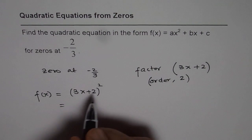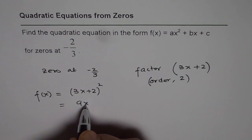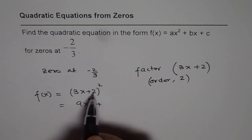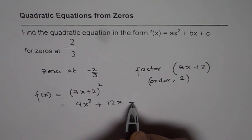So we can always expand this and find the quadratic equation in standard form. So we get 9x² + 2 times ab, that is 4 times 3 is 12x + 4.